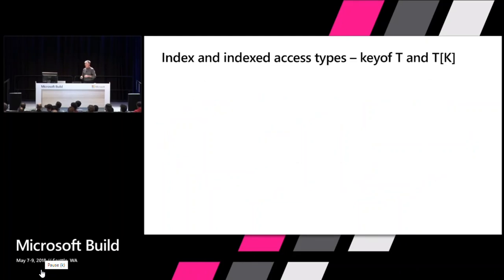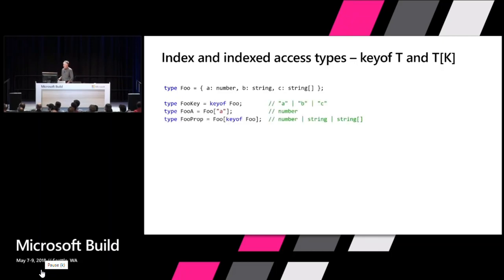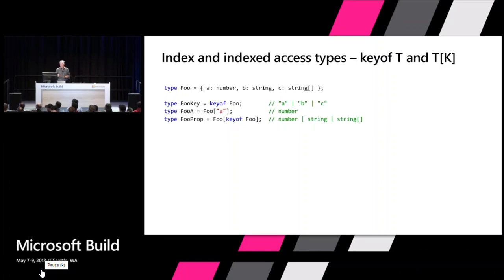Over time we've added interesting new type constructors. Index and index access types were added in the last year. This is the ability to reason in the type system over the names of the properties of an object. For example, I have a Foo type with three properties, and we have a built-in type operator called keyof that lets you say what the possible names of properties of this type are — that gives you a union type 'a' or 'b' or 'c'. We also have index access types where you say you'd like a type that is the same as the type of the a property in Foo.